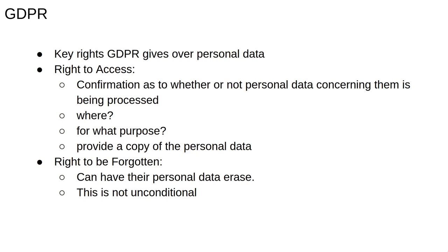GDPR grants users' rights over their personal data, including the right to access, meaning that data subjects can obtain confirmation from the data controller — for example Facebook or the University of Exeter — as to whether or not personal data concerning them is being processed, where and for what purpose. The controller also has to provide a copy of the personal data, free of charge, in an electronic format on request.